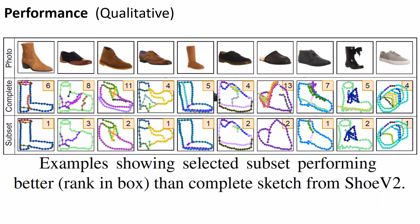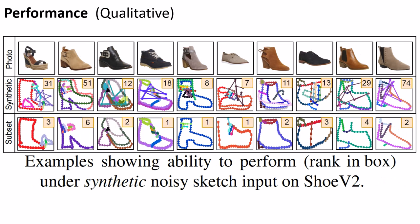Figure qualitatively shows how our model performs under inherent low-magnitude noise existent in the Chair V2 dataset. Evidently our selected subset's potential of retrieval accuracy is higher than the complete sketch. Considering extreme noisy scenario, we augment the training sketches by synthetic noisy patches and train our subset selector with a pre-trained retrieval model. During inference, noisy strokes are synthetically added and passed through stroke subset selector before feeding it to the retrieval model.